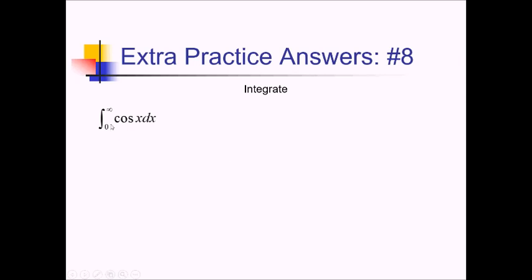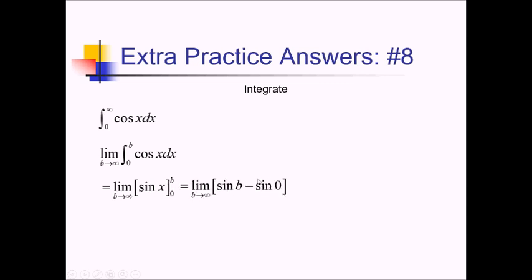For this problem, I'm trying to take the integral from 0 to infinity of cosine of x dx. Since it's an improper integral, I have to rewrite this as the limit as b approaches infinity of the integral from 0 to b of cosine of x dx. The antiderivative of cosine is just sine of x, so evaluating from 0 to b gives sine of b minus sine of 0. Here's where we run into the issue: if you plug infinity into this, sine is not approaching a specific value — it oscillates back and forth between negative 1 and 1 and doesn't settle. Because this oscillates, the integral diverges and we don't have a value for this one.